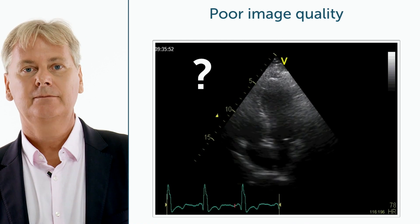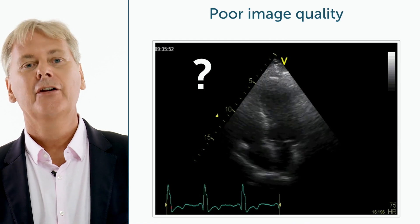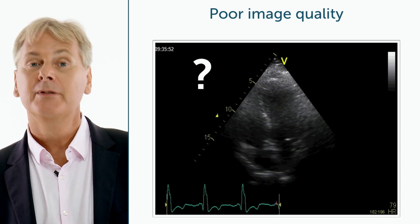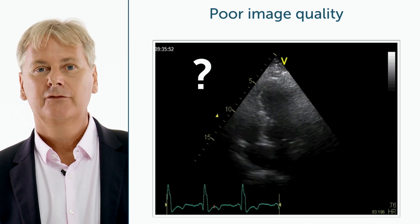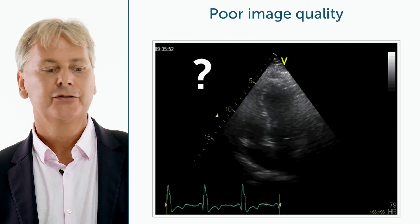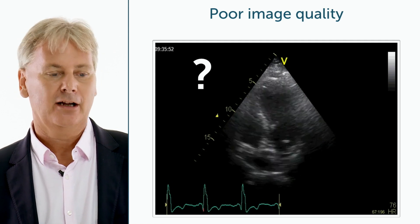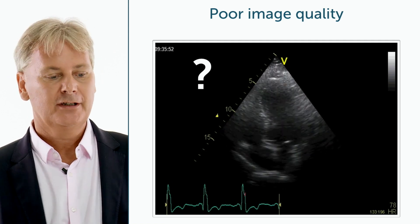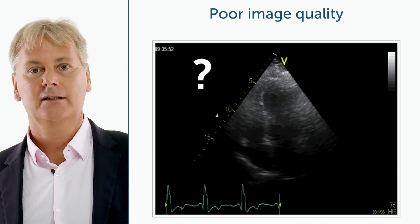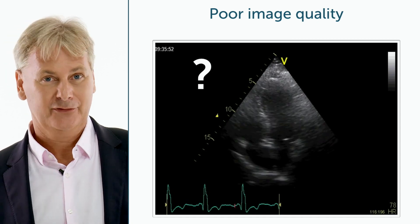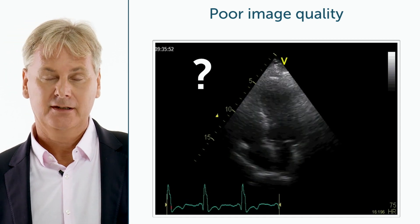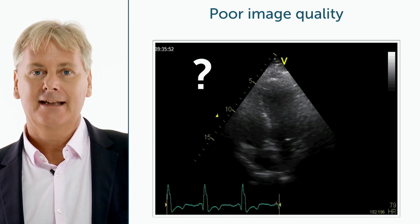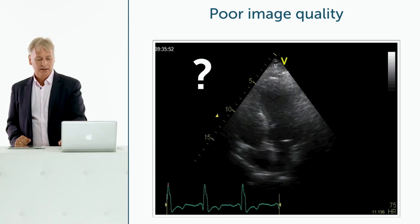Do you know this situation? It's very common. You've got a patient who's obese, and for some reason you simply cannot get a good image. Still, it's very important — the patient comes in with dyspnea, and you want to know what his left ventricle function is. Well, this is the classic indication for left heart contrast.